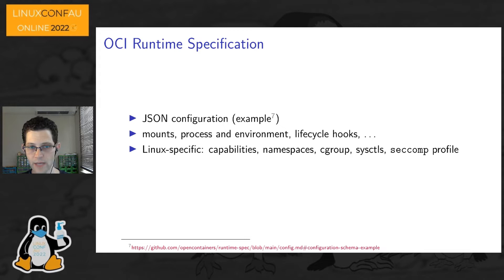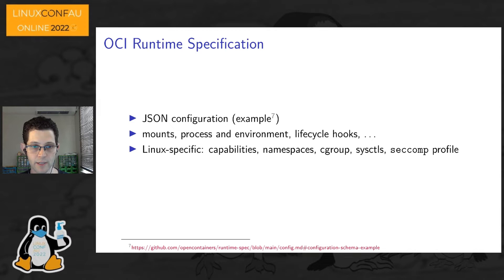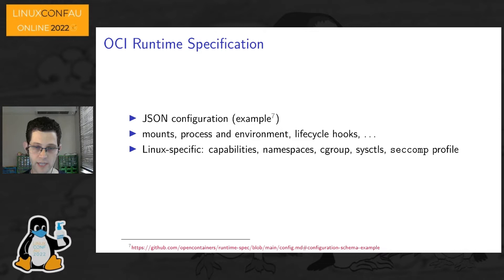The runtime specification uses a JSON configuration format — quite verbose, but there's a link to an example. General things specified for any container include the mounts, the process to be executed and its environment, and lifecycle hooks for running commands on the host or inside the container upon start, stop, creation, and destruction. Linux-specific tunables include capability sets, what namespaces should be used or created anew, what cgroup the container lives in, sysctl settings, seccomp profile, and similar things.